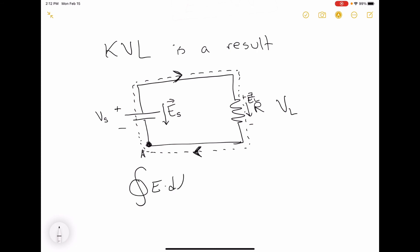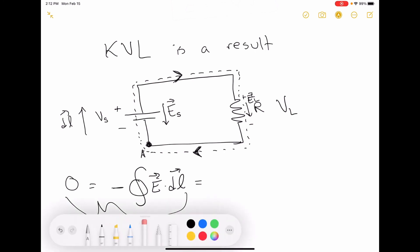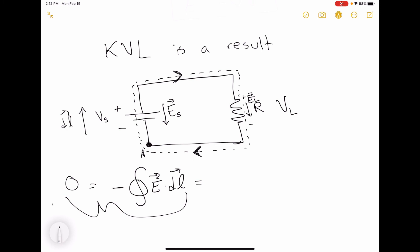I do the integral of E dot DL around the loop. DL is pointing up on this side, and I have a minus sign, and this is equal to zero — that's our property that we're using. The first thing I get is minus the integral of ES dot DL, and since these are oppositely directed, this works out to minus the magnitude of ES times DL.